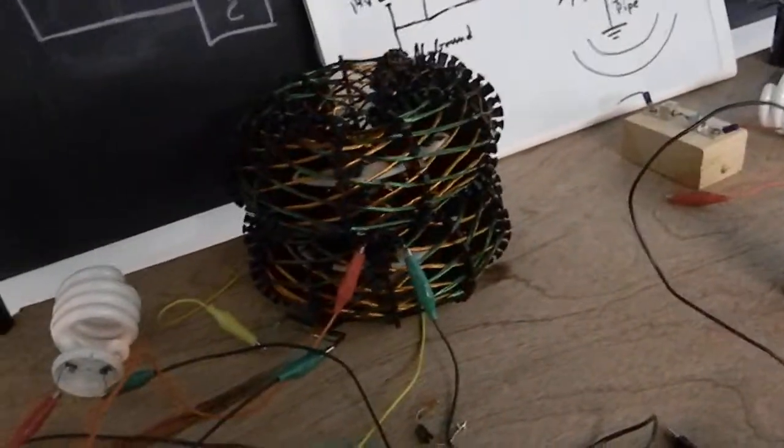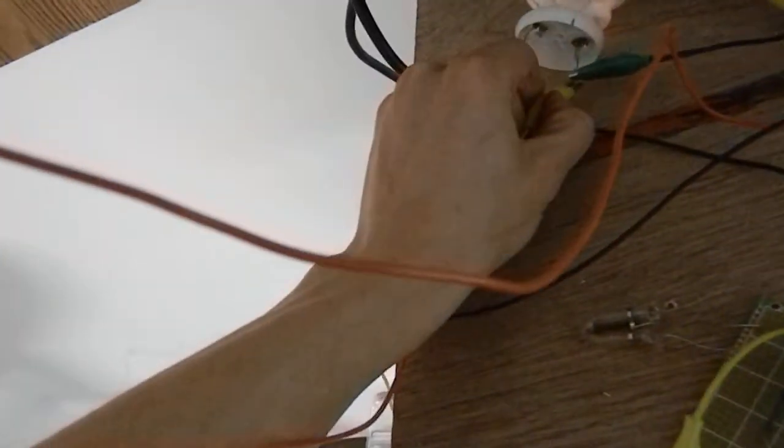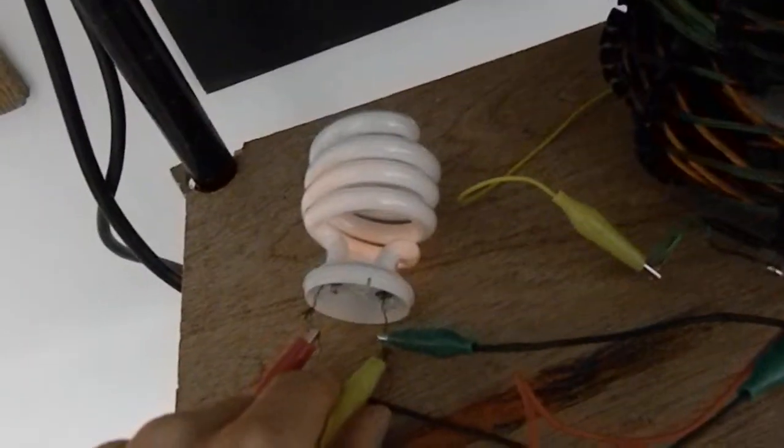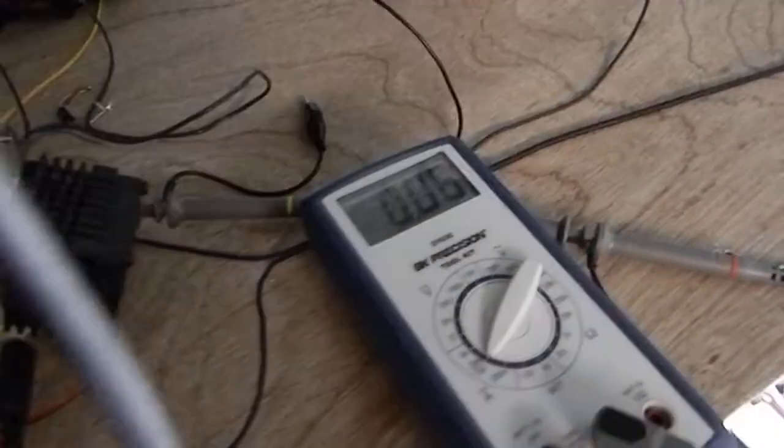And so this is a CFL. And then this goes to this big old capacitance here. And if we just connect the capacitance, there's no real difference. Still pulling 60 milliamps.